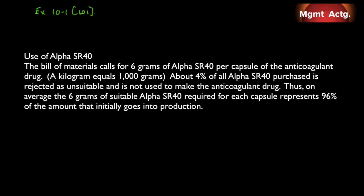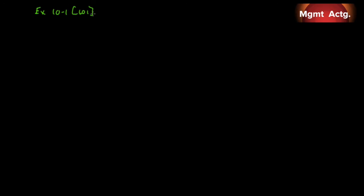About 4% of all Alpha SR40 purchased is rejected as unsuitable and is not used to make the anticoagulant drug. Thus, on average, the 6 grams of suitable Alpha SR40 required for each capsule represents 96% of the amount that initially goes into production. That may sound a little bit confusing, but we'll see how we can solve that problem two different ways.